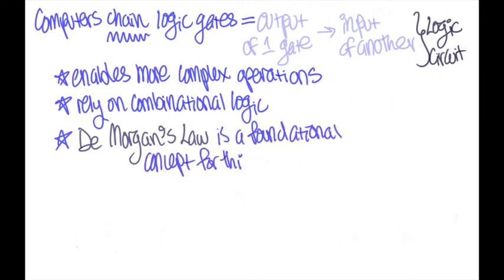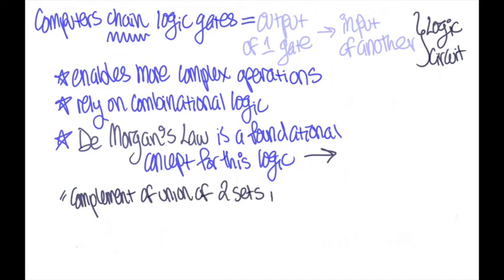And De Morgan's law is a foundational concept to understand when creating such circuits. De Morgan's law states that the complement of the union of two sets is equal to the intersection of their complements.